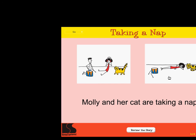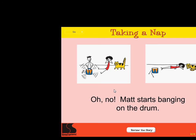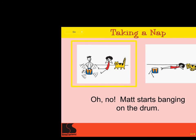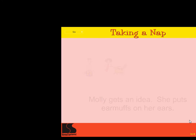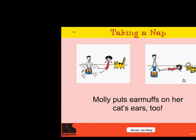Click on the picture that matches these words: Molly and her cat are taking a nap. Excellent! Click on the picture that matches these words: Oh no! Matt starts banging on the drum. Correct! Click on the picture that matches these words: Molly gets an idea. She puts earmuffs on her ears. Super! Click on the picture that matches these words: Molly puts earmuffs on her cat's ears, too. Right on!